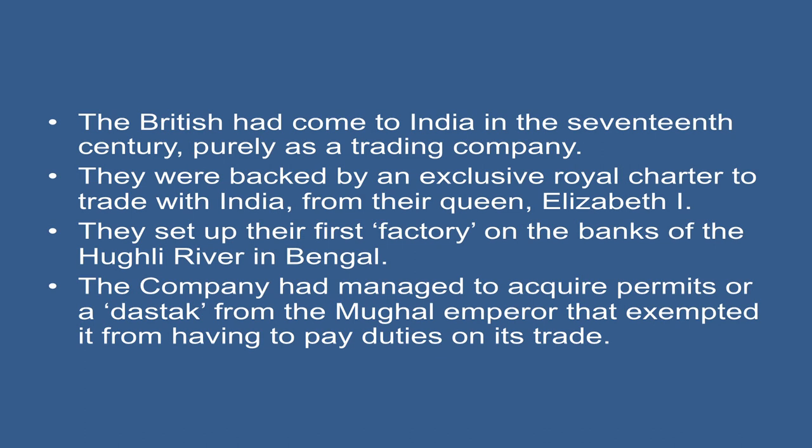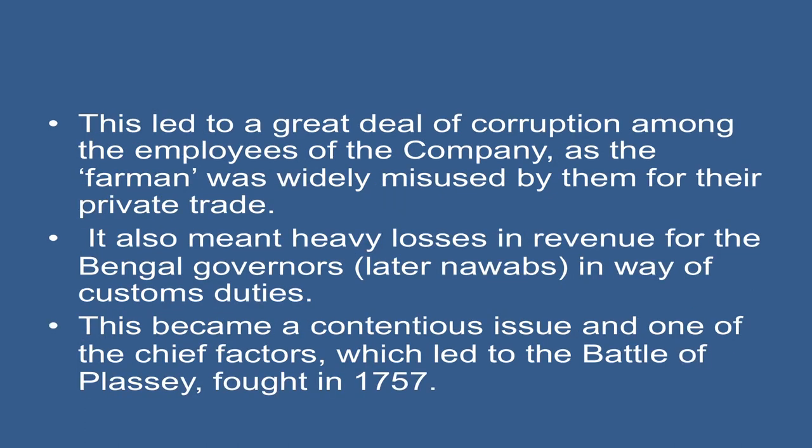They were backed by an exclusive royal charter to trade with India from their queen, Elizabeth the First. They set up their first factory on the banks of the Hooghli River in Bengal. The company had managed to acquire permits, or a dastak, from the Mughal emperor that exempted it from having to pay duties on its trade. This led to a great deal of corruption among the employees of the company, as the firman was widely misused by them for their private trade.